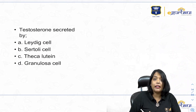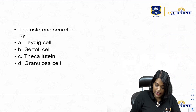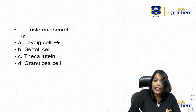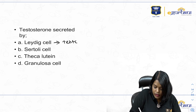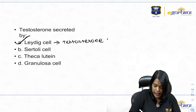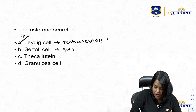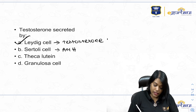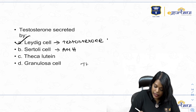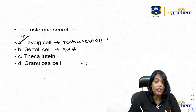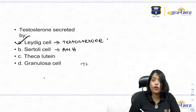Testosterone is secreted by which cells — Leydig cells, Sertoli cells, theca-lutein cells, or granulosa cells? Leydig cells secrete testosterone, whereas Sertoli cells secrete AMH. Theca cells also secrete testosterone, but that testosterone enters granulosa cells and gets converted to estrogen or progesterone.